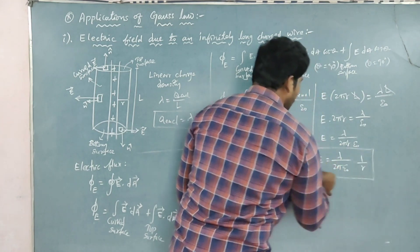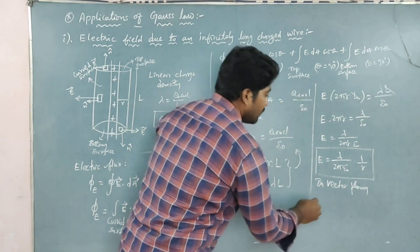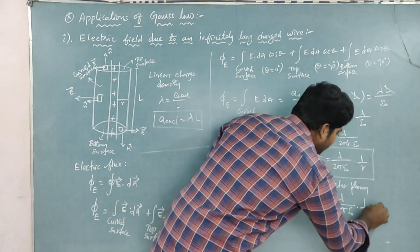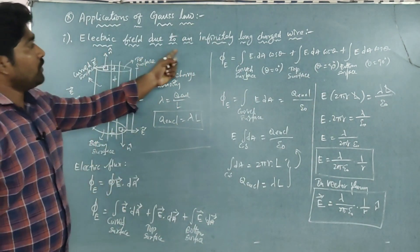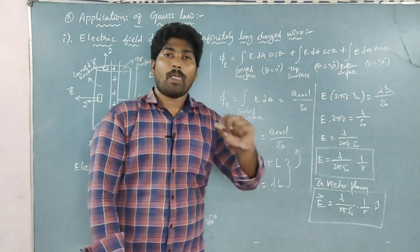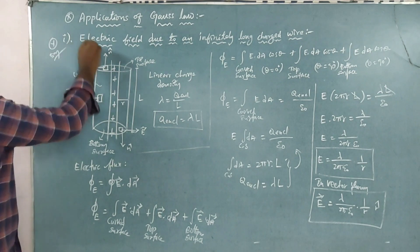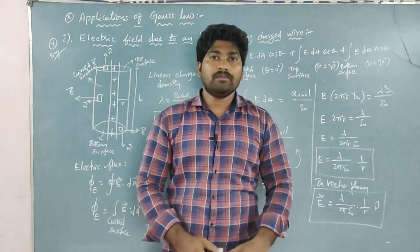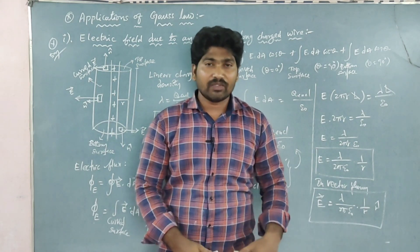So E times 2 pi r L equals lambda L divided by epsilon naught, giving E equals lambda divided by 2 pi epsilon naught r. In vector form, E vector equals lambda divided by 2 pi epsilon naught r, times 1 over r, times r-cap. This is the final formula to find the electric field due to an infinitely long charged wire. This first application is very important. Write and understand it. Thank you for watching. Next video — bye.